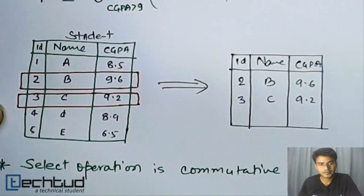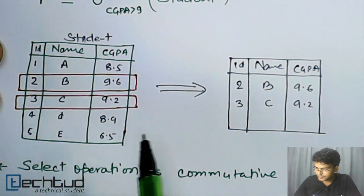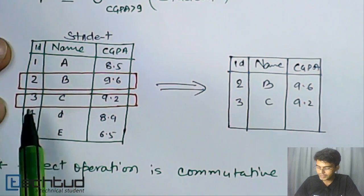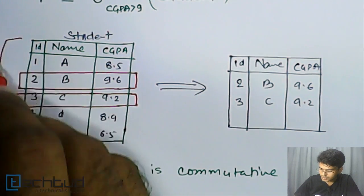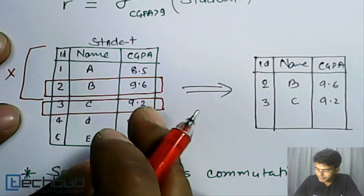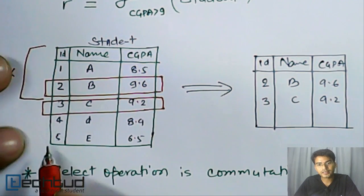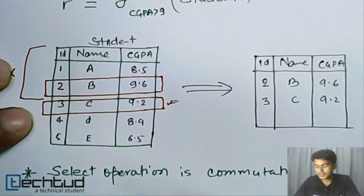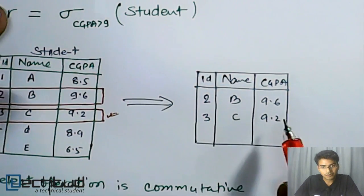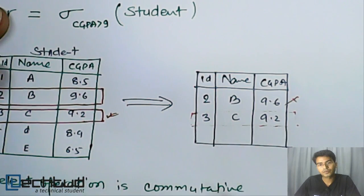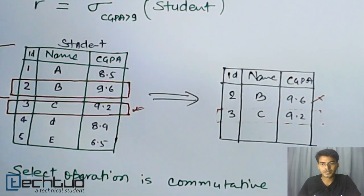For example, if we first select students whose id is greater than 2, those rows with id not greater than 2 are discarded. Then on the remaining relation we apply the condition CGPA greater than 9, and only one result comes through. If we reverse the order — first filter by CGPA greater than 9, then filter by id greater than 2 — we are left with the same single row. This proves commutativity.